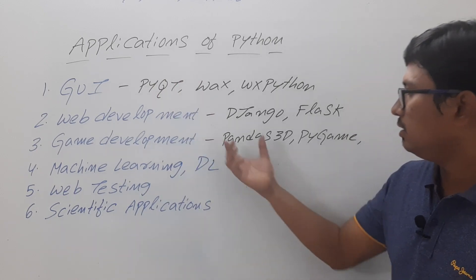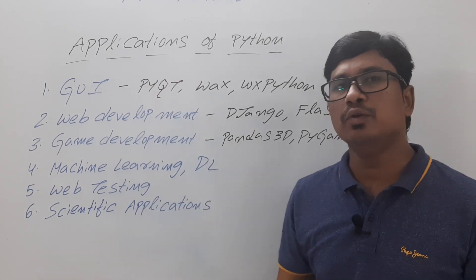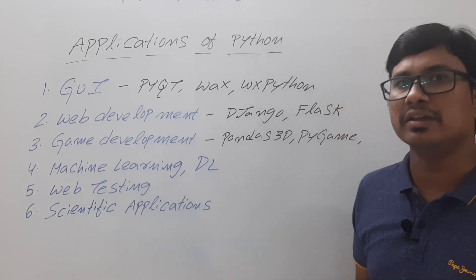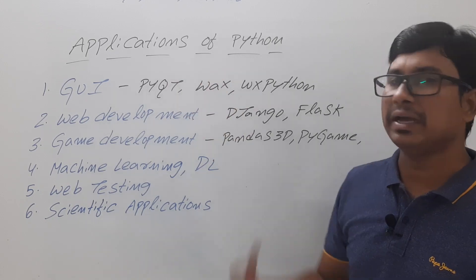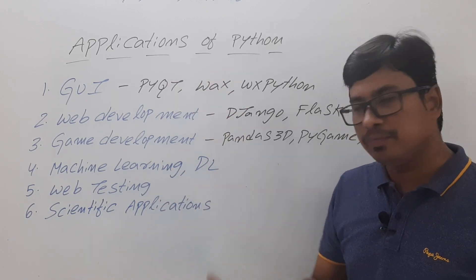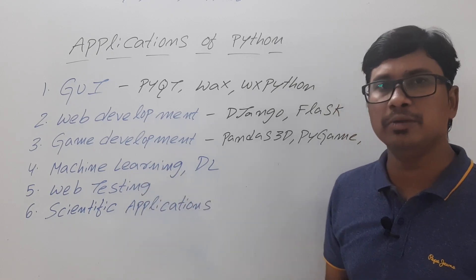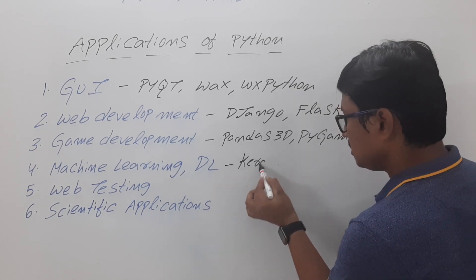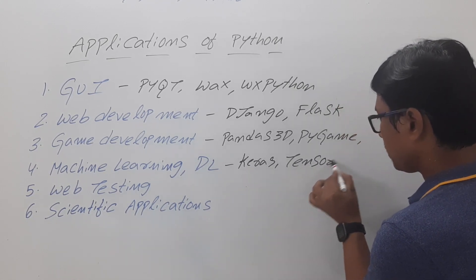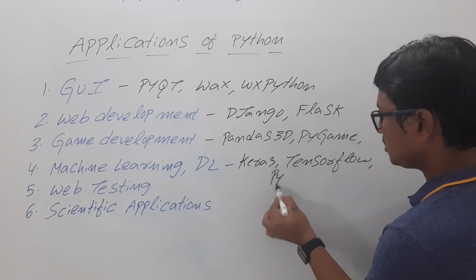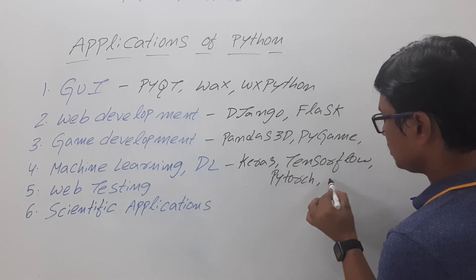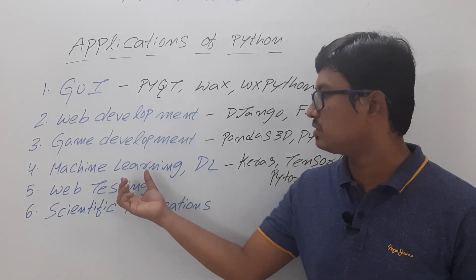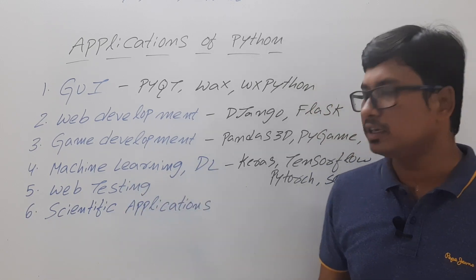If you want to work in the domain of artificial intelligence, data science, machine learning, and deep learning, these things can also be done using Python. You can design and develop models for machine learning and deep learning using Python with the help of packages such as Keras, TensorFlow, PyTorch, and Scikit-learn. All these packages are required to develop models using Python for machine learning and deep learning.